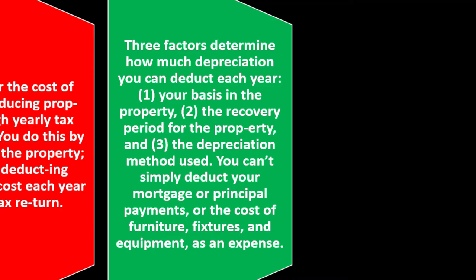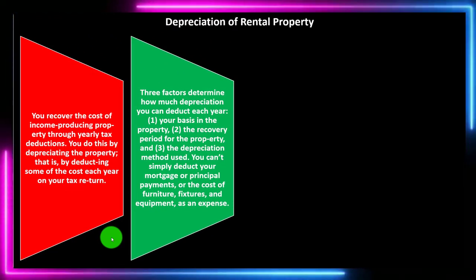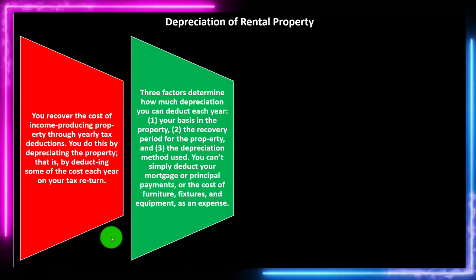Common accounting depreciation methods include double declining or straight line, the two most common. Double declining is an accelerated method, and typically if we can get an accelerated method we would like to, because it allows us to deduct more on the front end than in later years. For taxes, deducting earlier is generally more beneficial. But we're restricted to what the tax code says regarding the type of property, how long we have to depreciate it over, and what depreciation method we're allowed to use.